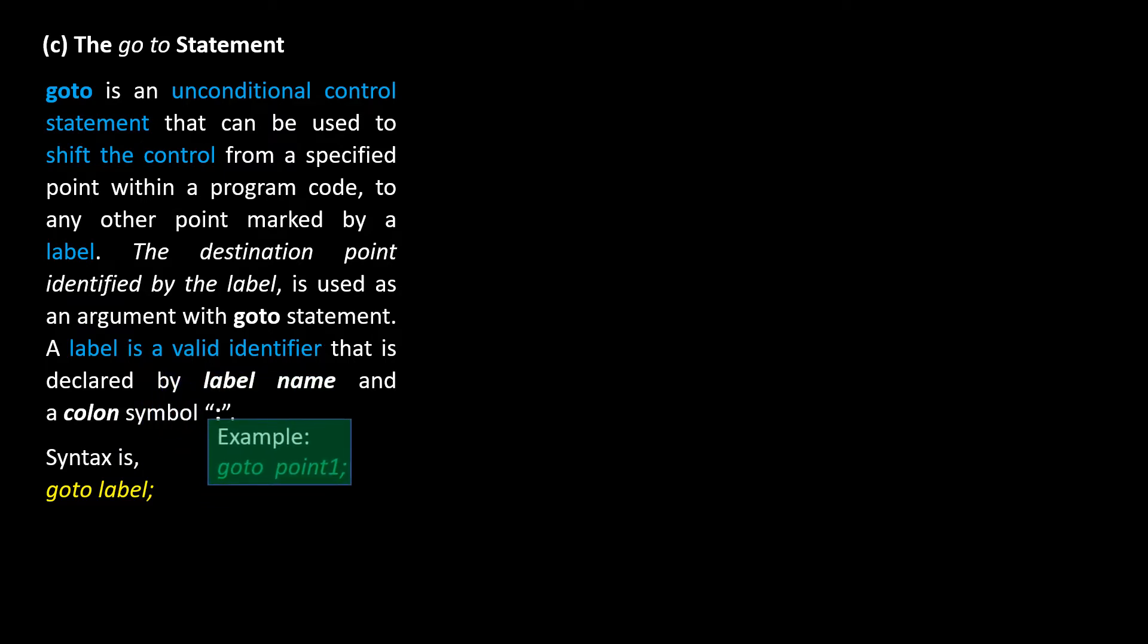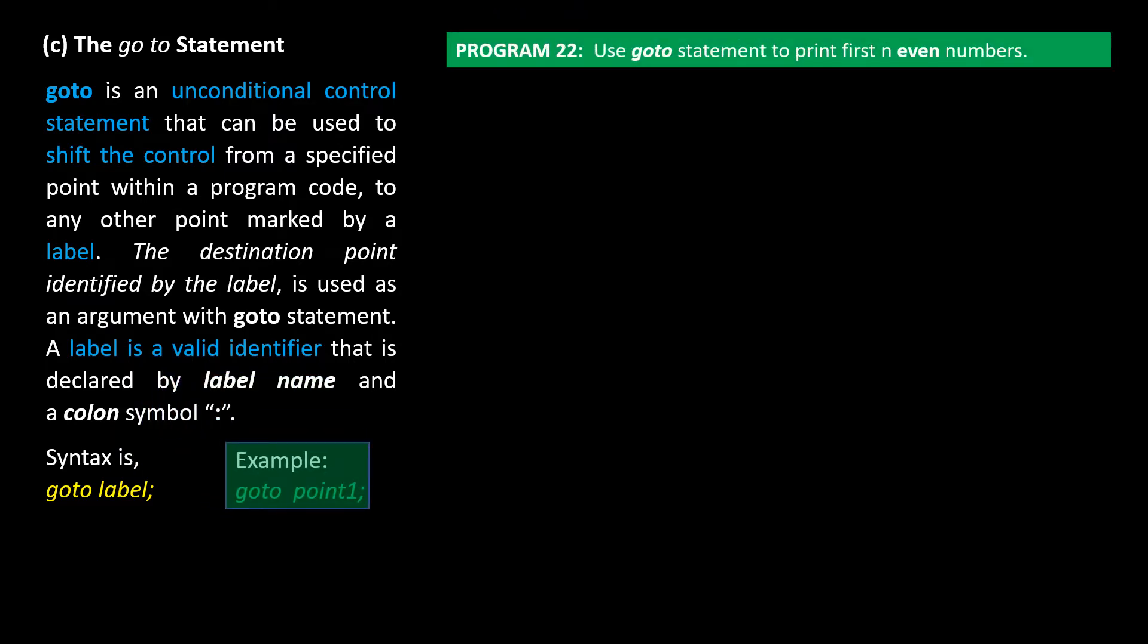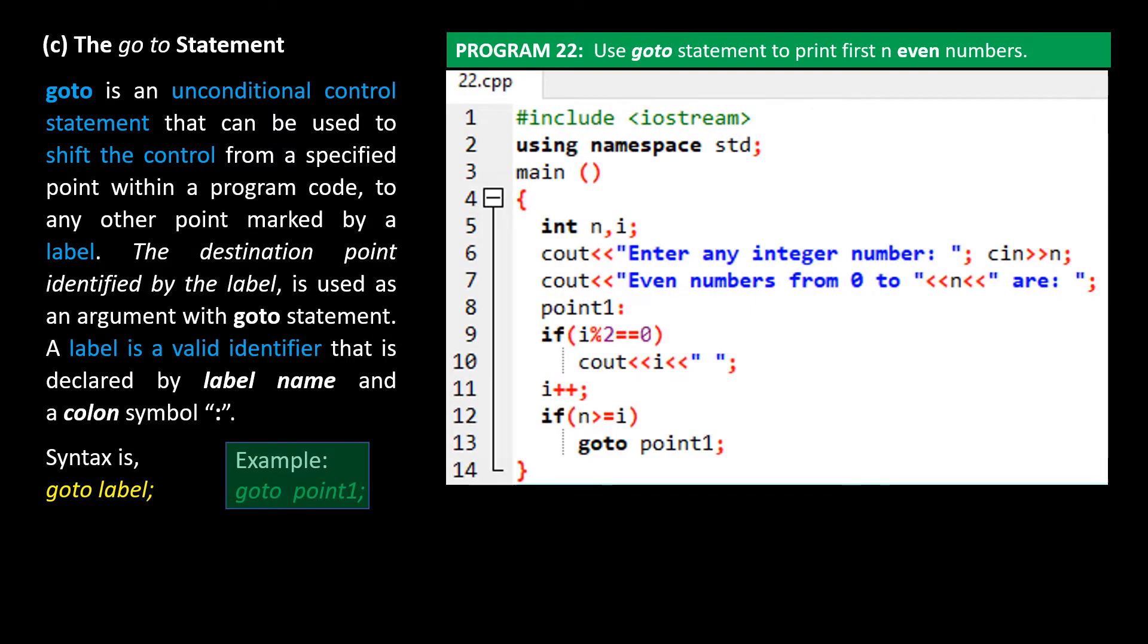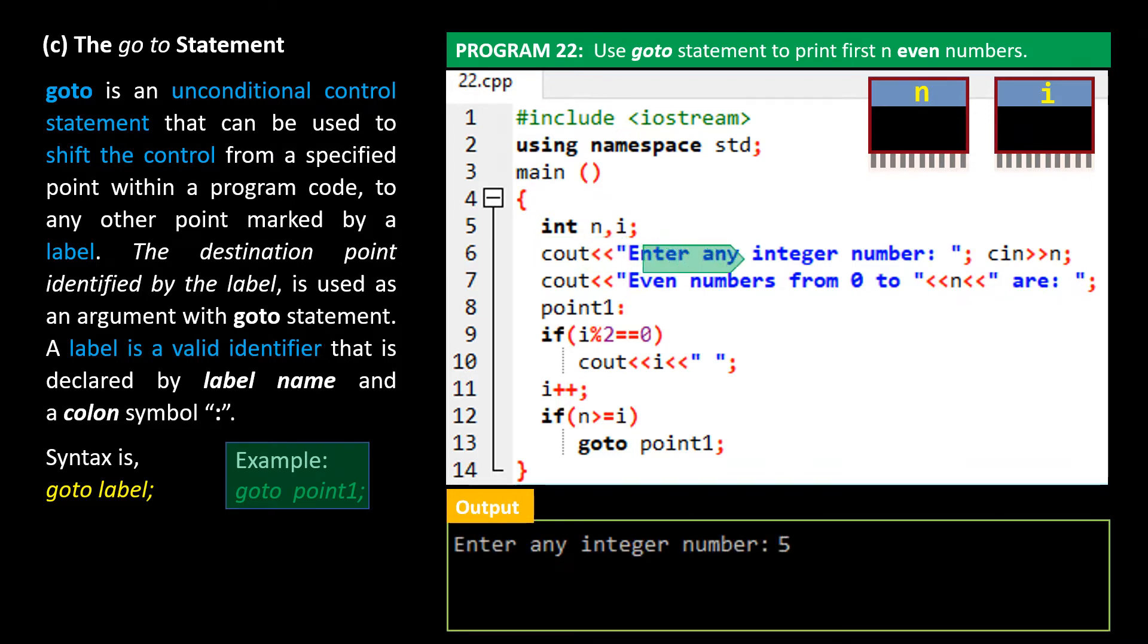Let's see how goto works in a program that prints first n even numbers. In this program, I will go by the logic that all even numbers when divided by 2 should give a remainder equals 0. So I check each number from 0 to n and print the even numbers. Here is the program code. I save this program as 22.cpp. I declare integer variables n and i. The user is then prompted to enter any integer number. I enter 5. It is sent to variable n. The next program instruction prints on screen the message, even numbers from 0 to 5 are.